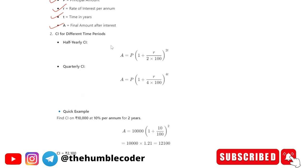So compound interest for different periods. Half yearly compound interest you can calculate using this. Basically you just need to update the time values. And quarterly also.